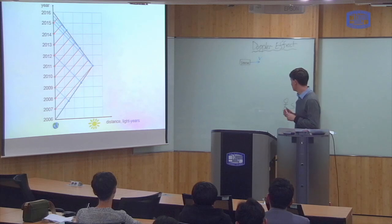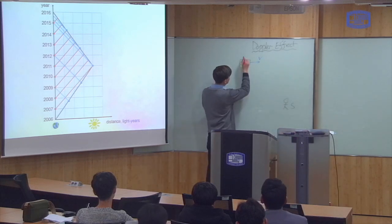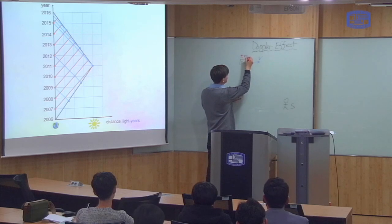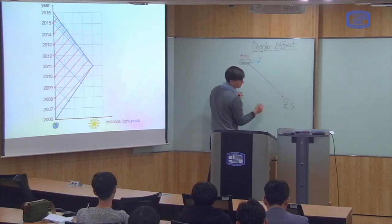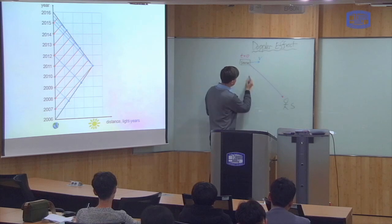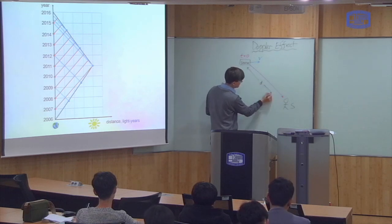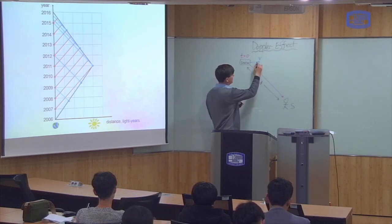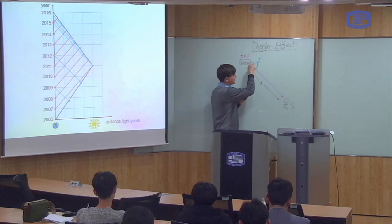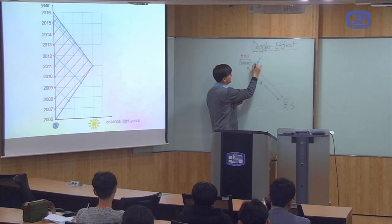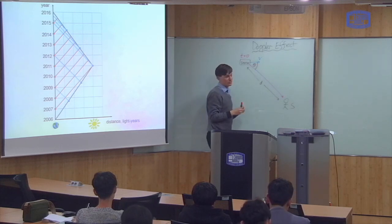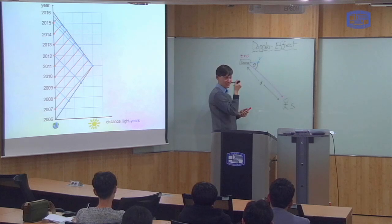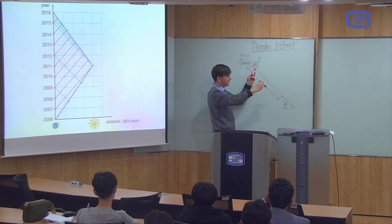The source sends out a signal here at time t equals zero. The signal will come out and will reach the observer. Let's say that the distance from the source to the observer is d, and I'm going to assume that the angle between the velocity of the source and the direction of the observer is theta. Theta equals zero means the source is coming straight at you; theta equals 90 means it's perpendicular; theta equals 180 means it's going away from you.